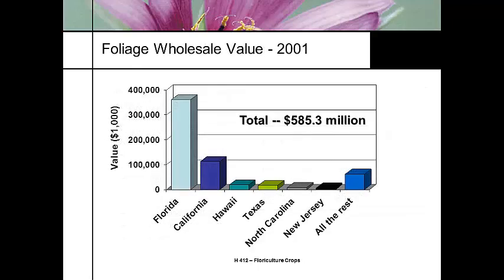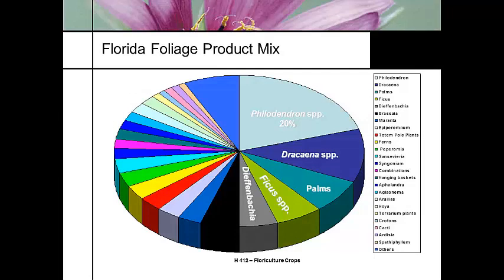In terms of where the production is, it's Florida primarily, then California and Hawaii — though a lot of Hawaii's production stays in Hawaii. The largest group in the product mix is philodendron species, followed by dracaenas, palms, ficus, and dieffenbachia. A lot of syngoniums and other materials round it out, but the biggest product mix in the foliage market is philodendrons, dracaenas, and palms.